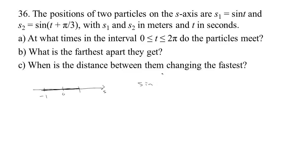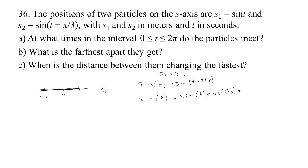They would meet when the position of particle one equals the position of particle two, which would be when sine t equals sine of t plus pi thirds. One way to solve this is to use the angle sum formula. The sine of a plus b is sine a times cosine b plus cosine a times sine b. The cosine of pi thirds is one half, and the sine of pi thirds is root three over two.